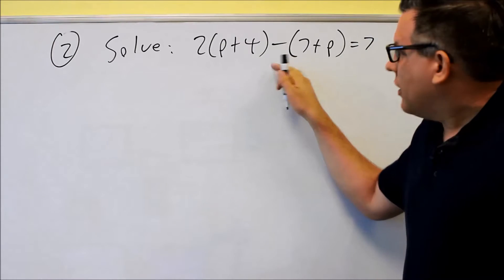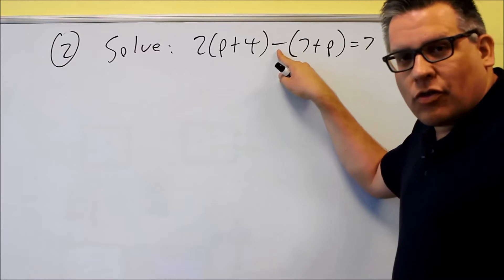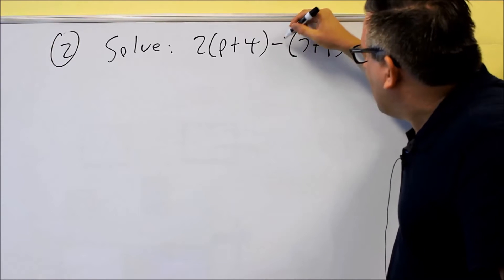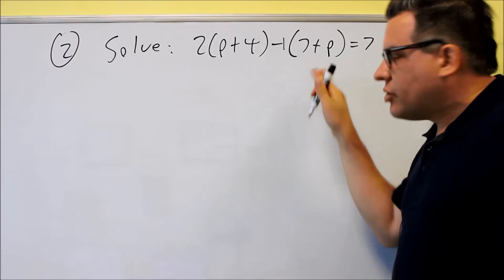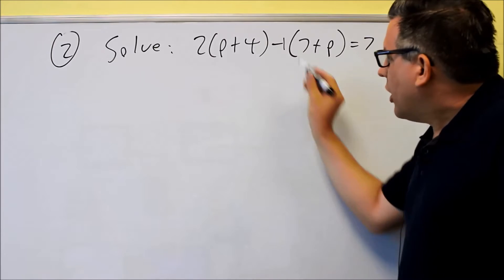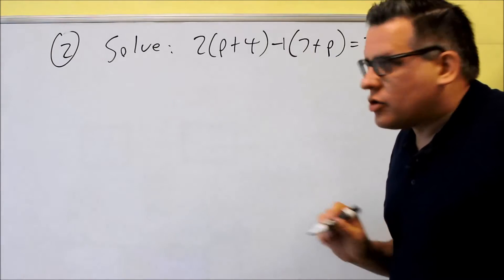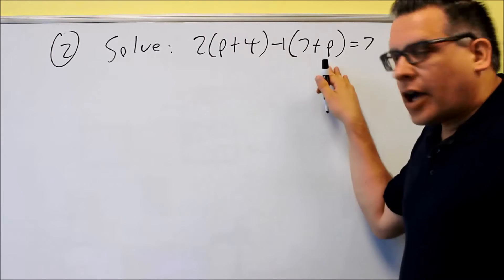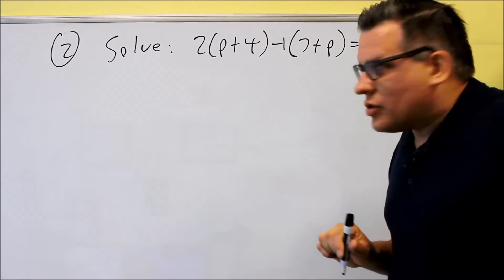Now, the way this is written, there's a negative in front of here. What we can think of is this as a negative one times everything inside the parentheses. So the first step we're going to do is distribute the two and the negative one and clear out the parentheses.